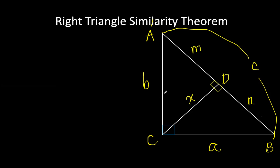We will be using similarity theorems and corollaries to derive the formulas, but we're not going to derive them in this session. Instead, we'll determine what the formulas are and apply them later in solving right triangles. For the altitude X, we have X squared equals the product of the two segments of the hypotenuse — that is, X squared equals M times N.